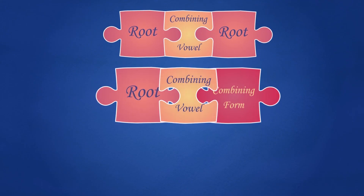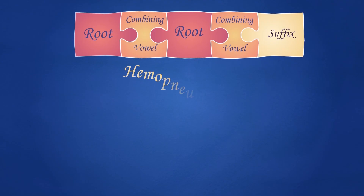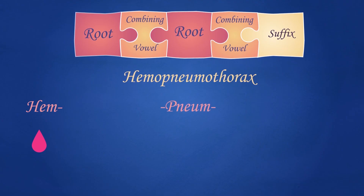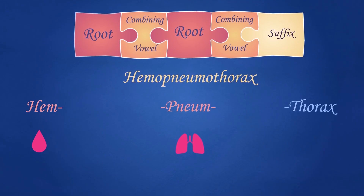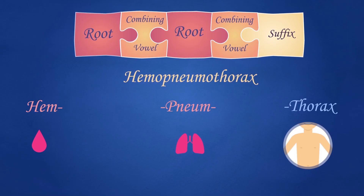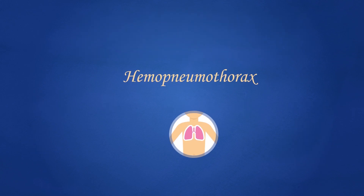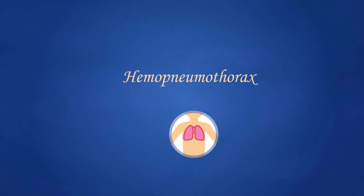We use combining forms to attach a root to another root, or to another combining form, and before a suffix. An example of a term with more than one root is 'hemoneumothorax'. It has the root 'hem' from the Greek word meaning 'blood', and the root 'pneum' from the Greek word meaning 'air or lung', and the suffix 'thorax' from the Greek word meaning 'chest'. The combining vowel 'o' is added to these two roots to make the combining forms 'hemo' and 'pneumo', and a combining vowel is used to join the root 'pneum' to the suffix 'thorax'. Hemoneumothorax is the presence of air and blood in the space that surrounds the lungs in the chest — as blood and air fill the pleural cavity, the lungs cannot expand and respiration is not possible, thus forcing the affected lung to collapse.